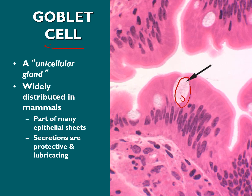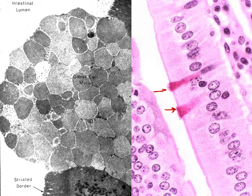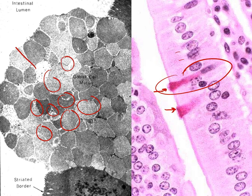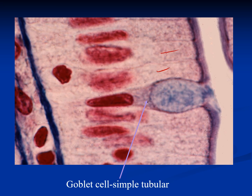The best example of a unicellular gland is the goblet cell. When we have simple columnar epithelium, we find these cells containing mucinogen granules, which form a layer of mucus. Goblet cells are found within non-glandular epithelium. They have a secretory and protective lubricating function. Once the mucinogen is released, we call the product mucin.